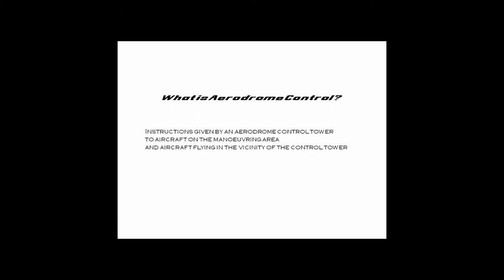As a definition, airdrome control is the set of instructions given by an airdrome control tower to aircraft on the maneuvering area and aircraft flying in the vicinity of the control tower. The control tower is perhaps the most visible and most identifiable form of air traffic control facility — that's the one you see at the airport with the glass going 360 degrees around it.